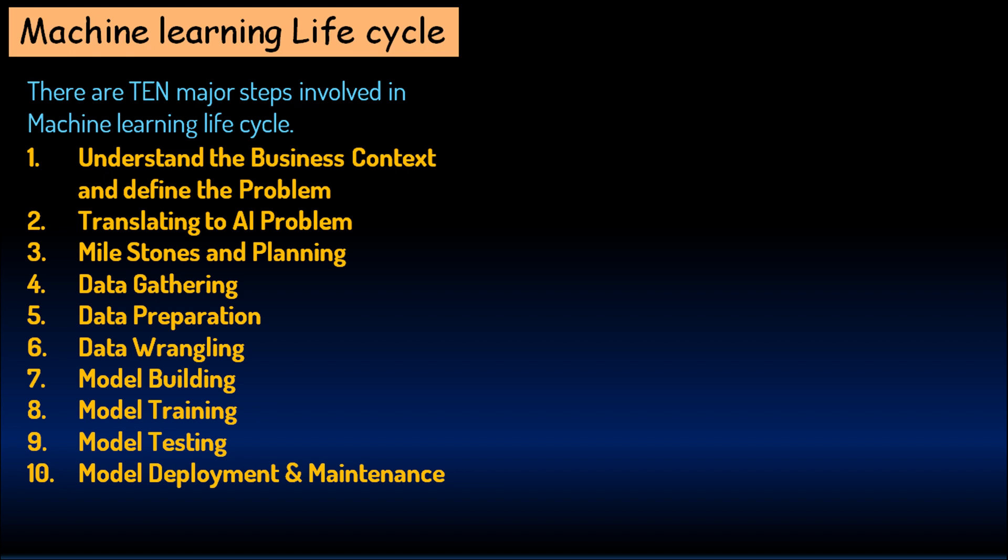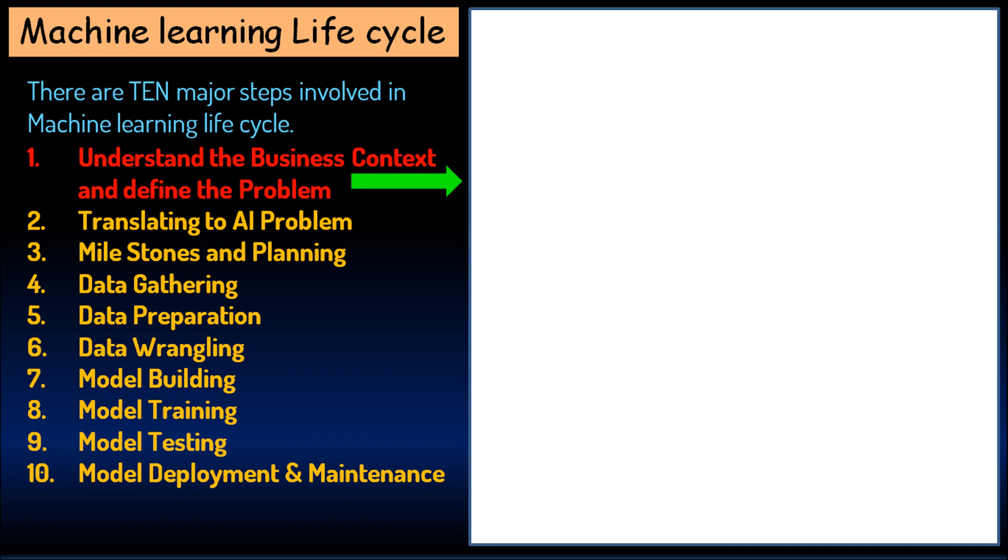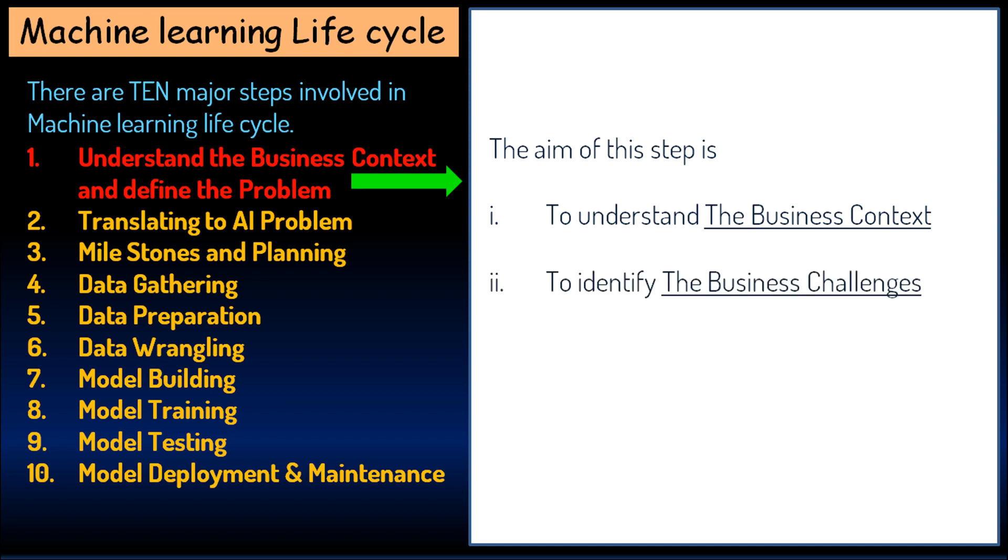Let's try to understand each one of them separately. Step 1 is to understand the business context and define the problem. The aim of this step is to understand the business context, to identify the business challenges, and to define the problem statement.